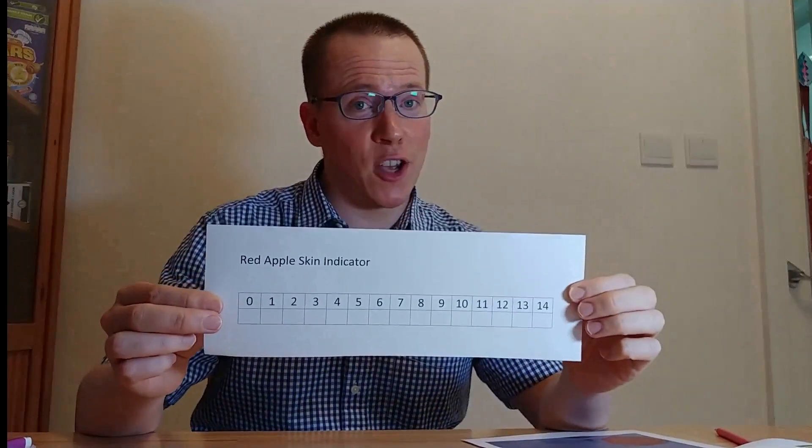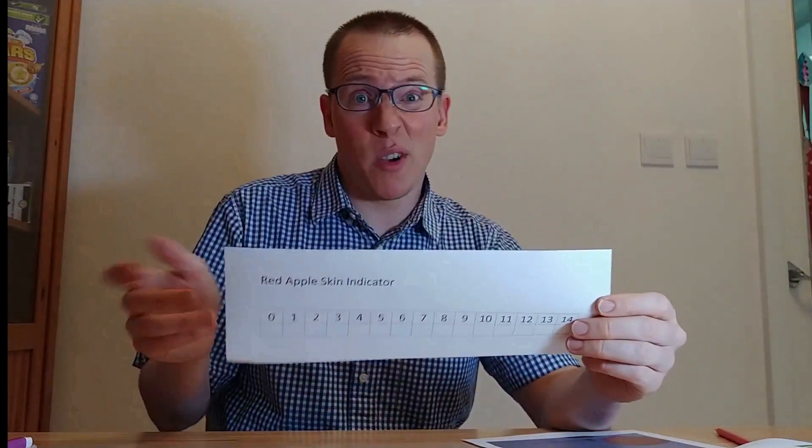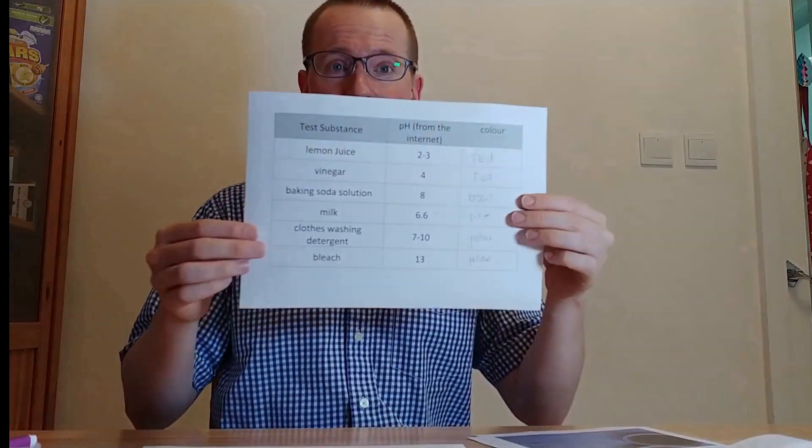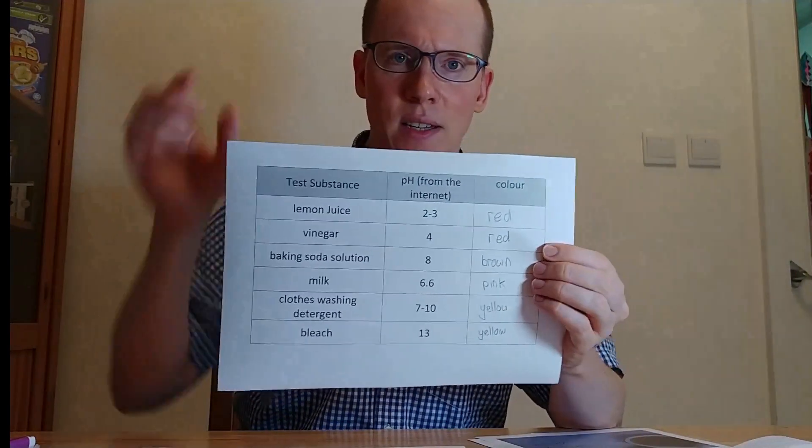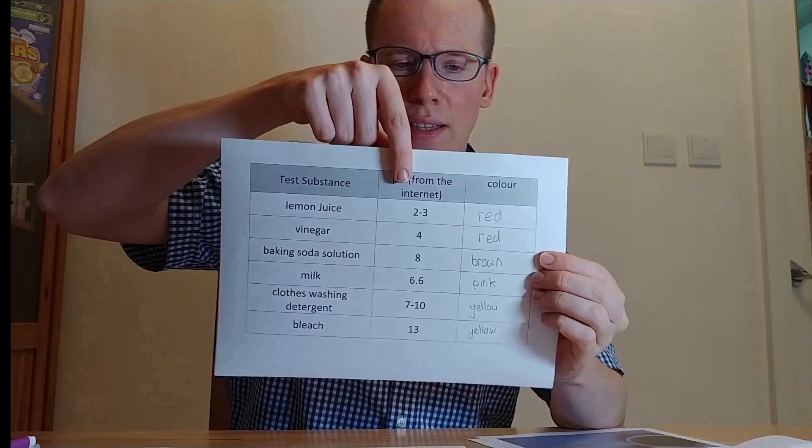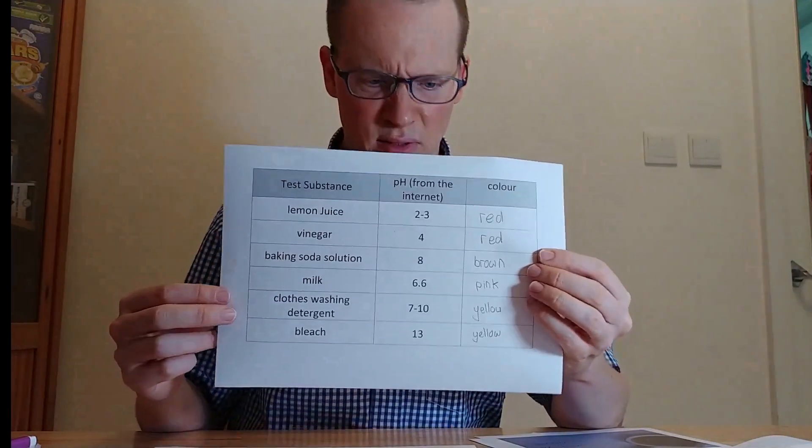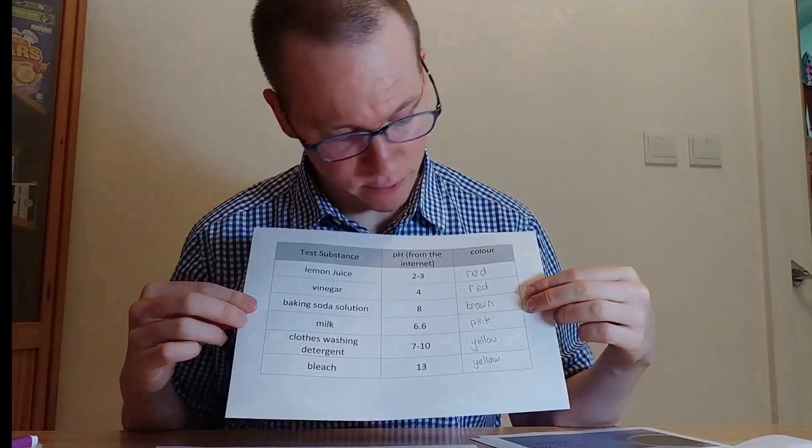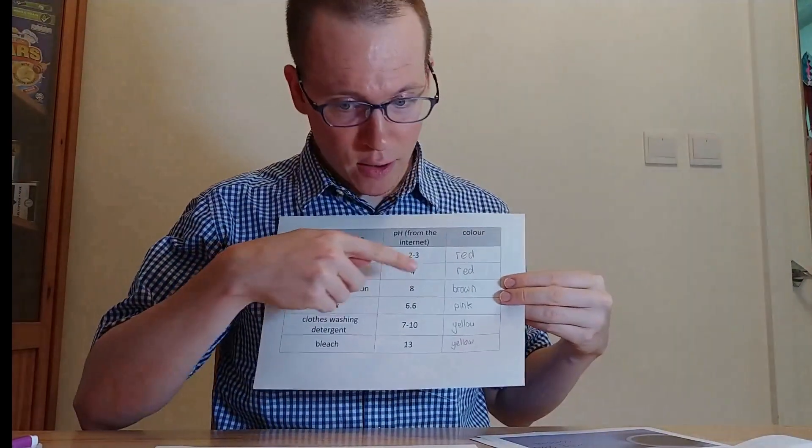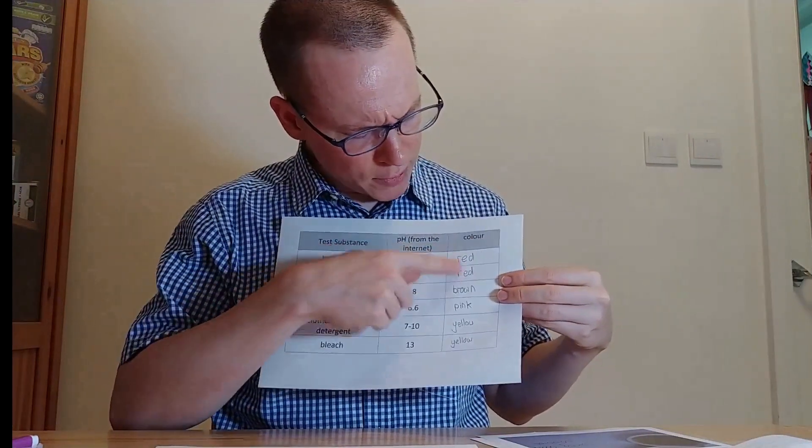I printed out a pH scale that goes from 0 to 14 and I'm just going to try and make my own scale from my own indicator. The first thing I wanted to do is write down the colors that the different liquids went. So I just did that basically in a table that I made here where I've got the test substance and the different test substances. The second column is the pH that I found on the internet.